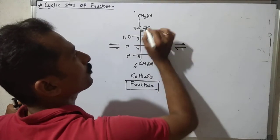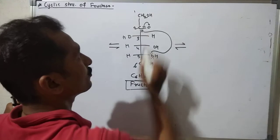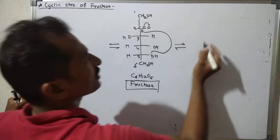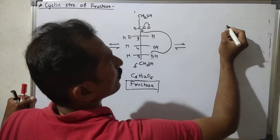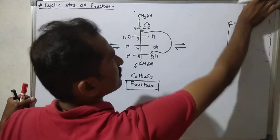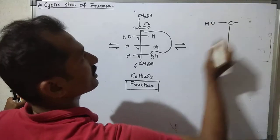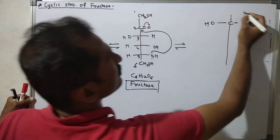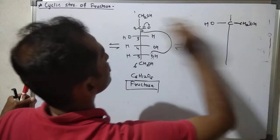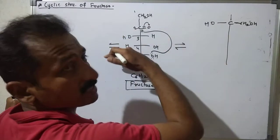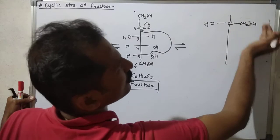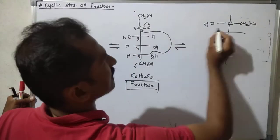The oxygen's lone pair attacks the carbonyl carbon; the double bond shifts to oxygen, giving a negative charge which picks up H to form C-OH. The CH2OH group can be placed either right or left (front side or back side attack), giving the two anomeric forms. The remaining chiral centers remain as they are: OH, H, H, OH, then H and OH.